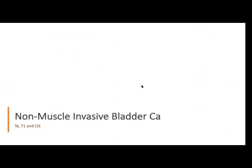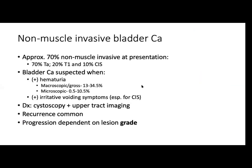Let's start with non-muscle invasive bladder cancer — TA, T1, and carcinoma in situ. Approximately 70% of non-muscle invasive present at presentation: 70% is TA, 20% is T1, and 10% will present with carcinoma in situ. Usually you check for hematuria and other irritative voiding symptoms. Diagnostics: cystoscopy and upper tract imaging, then TURBT. Progression is dependent on lesion grade.